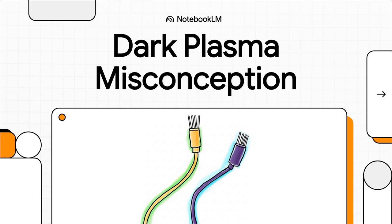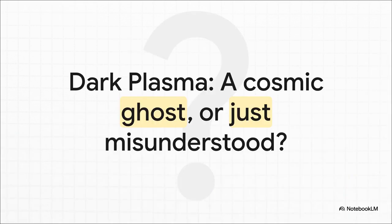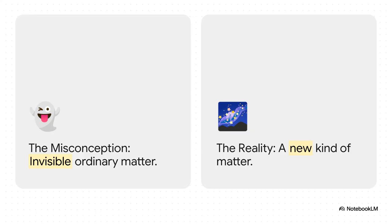Well, today we're going to untangle that whole mess. So what's the real story here? Is dark plasma some kind of ghost in the cosmic machine? A genuinely new type of matter that could unlock the universe's biggest secrets? Or is it just a classic case of mistaken identity? That is the big question we're digging into. You know, the whole confusion really boils down to this: a tale of two very different plasmas.